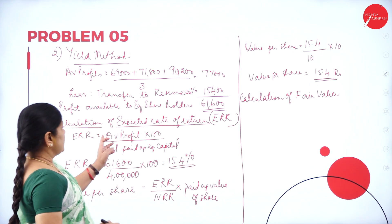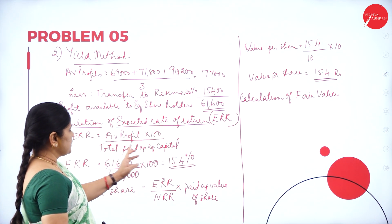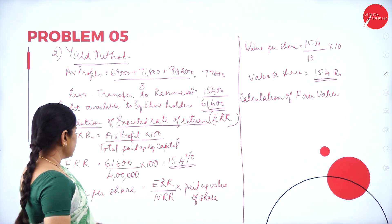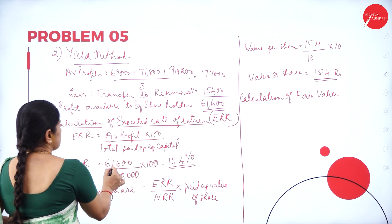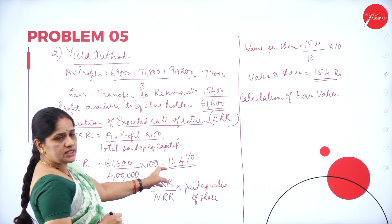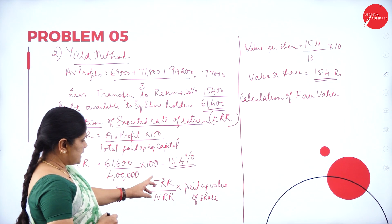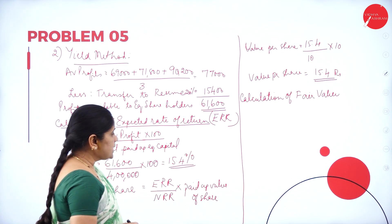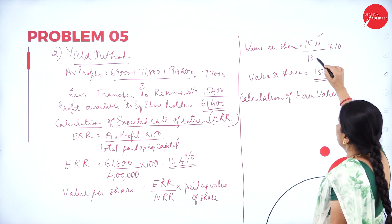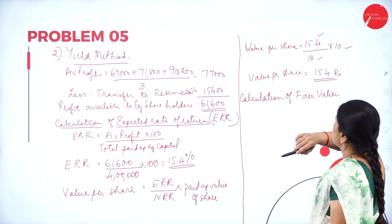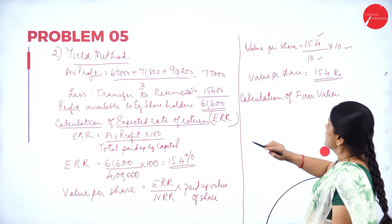Now we calculate the ERR — expected rate of return. ERR equals average profit into 100 divided by total paid-up equity capital: 61,600 divided by 4 lakhs into 100, giving ERR of 15.4%. The value per share equals ERR by NRR into paid-up value of the share: 15.4 divided by 10 into 10, giving value per share as Rs. 15.4.